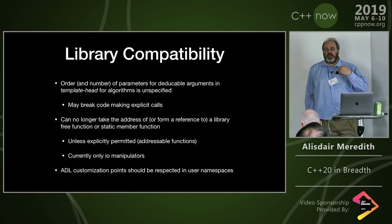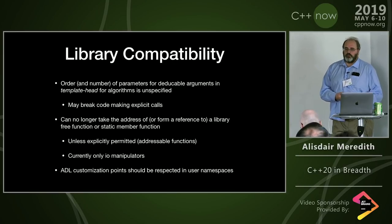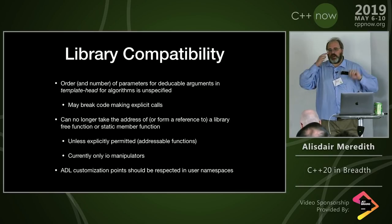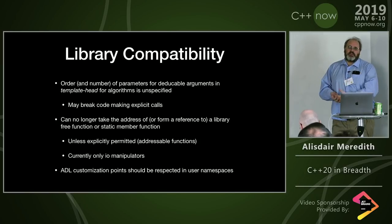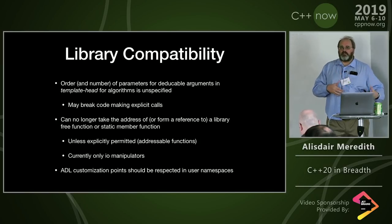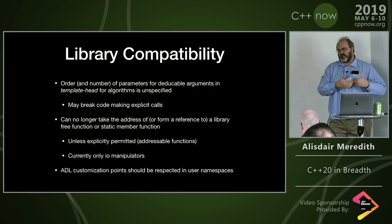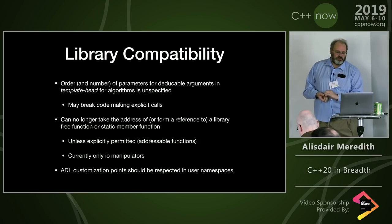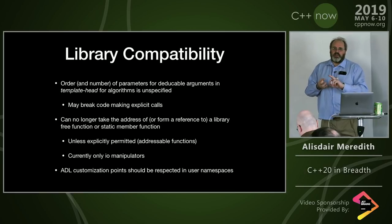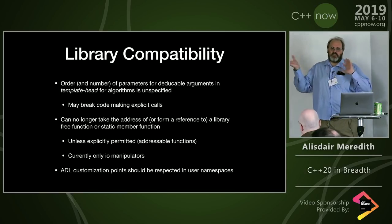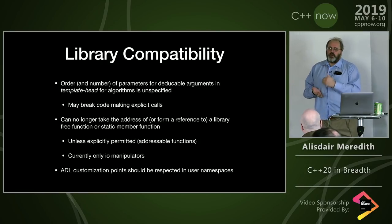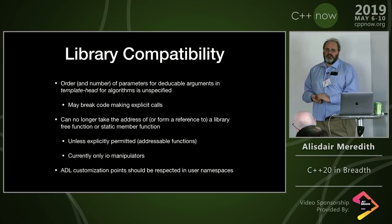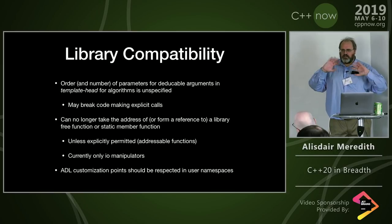The way the library explicitly permits taking the address of a function is not via new syntax or attributes — it's what we call 'words of power' in the standard. If the standard specification says a function is an 'addressable function,' it's in the set of things you can take the address of. Also, the ADL customization points we define — swap, begin, end, empty, data — we expect users to define these as free functions discoverable by ADL in their own namespace.